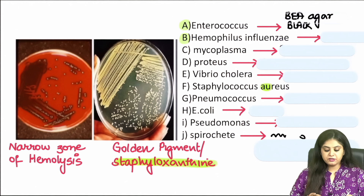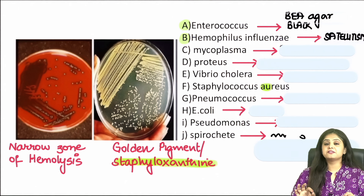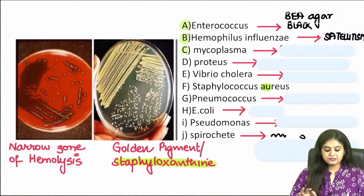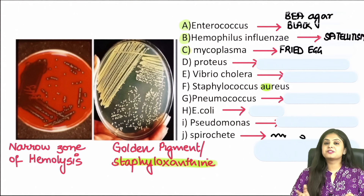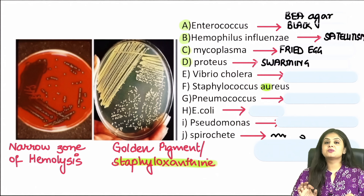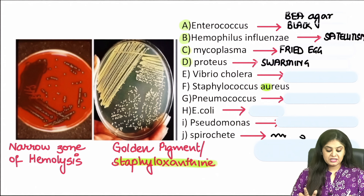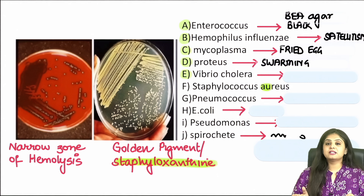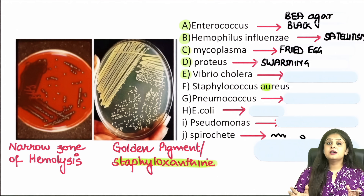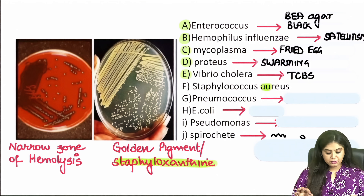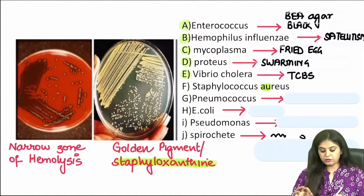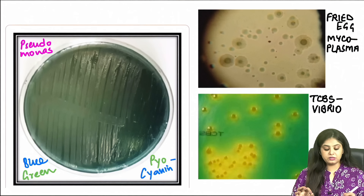Haemophilus influenzae is famous for showing satellitism and requires factor 5 and 10. Mycoplasma shows the fried egg appearance. Proteus shows the concentric growth pattern, which is the swarming motility. Vibrio cholerae shows rice water stools; the culture media is TCBS because that tells us about sucrose fermentation.